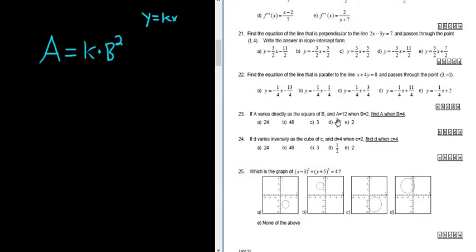Then it says A equals 12 when B equals 2. Okay, so now we have to use this information to find K. So A is 12. That's equal to K times, well, B is 2, so 2 squared. So then you get 12 equals, well, 4 times K, so 4K. Okay, and then divide by 4, divide by 4, so we get K equals 3.